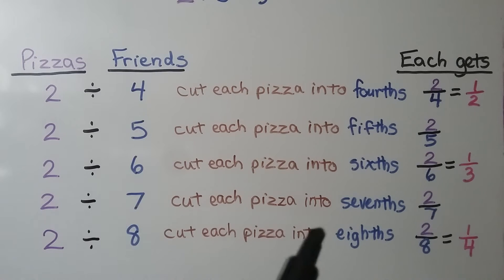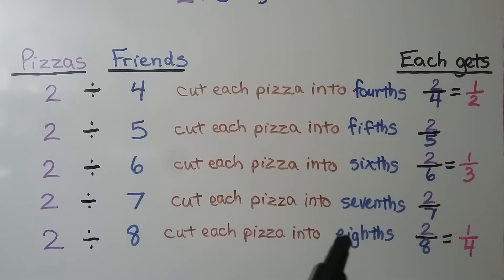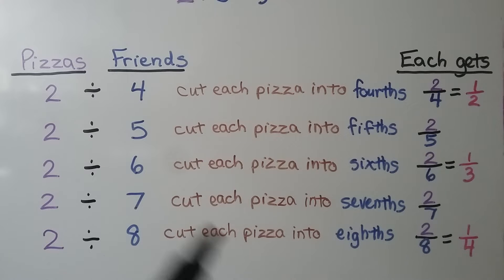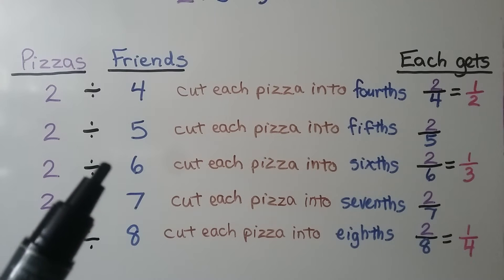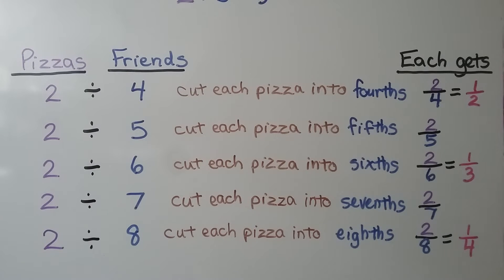The number of friends determines how many pieces each pizza was cut into, and then they got that fraction from each of the 2 pizzas. So we ended up with 2 fourths, 2 fifths, 2 sixths, 2 sevenths, 2 eighths — and we simplified the ones that needed simplifying.